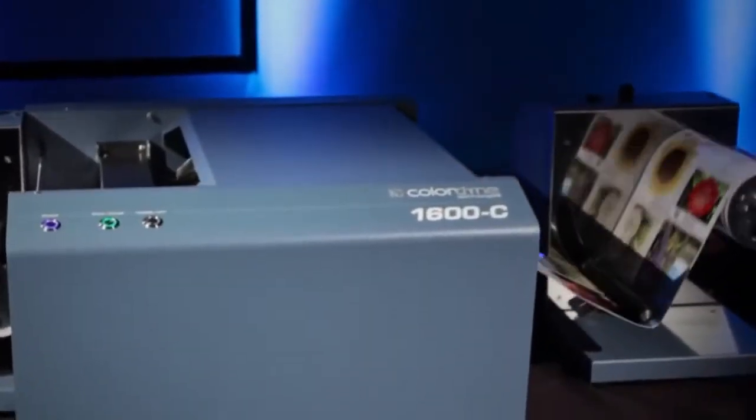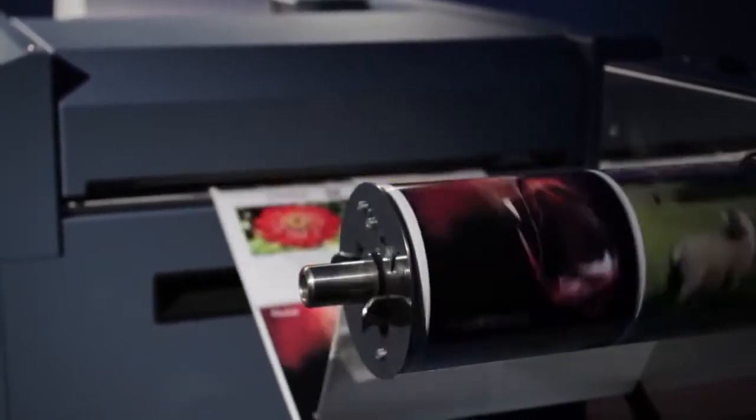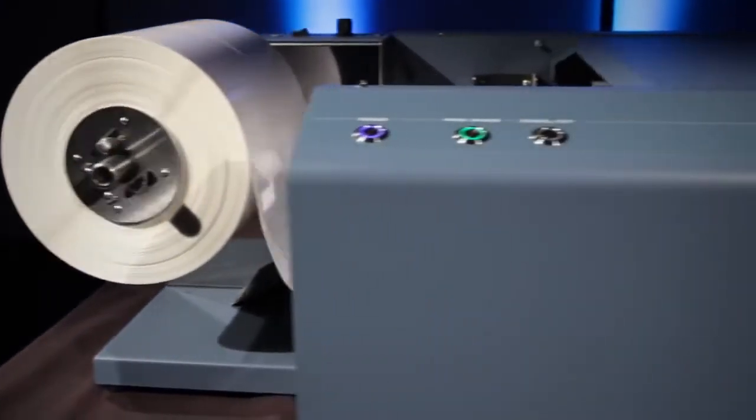The Colordyne 1600C high-speed continuous color printer features lightning-fast throughput speeds of up to 12 inches per second. Available in roll-to-roll or fan fold,